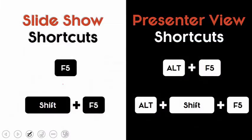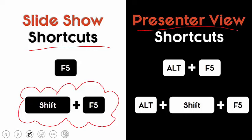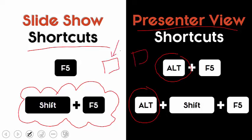Your slideshow shortcuts are F5 and Shift+F5 — by far my all-time favorites, which I use constantly when building and editing slides. To get to presenter view, all you need to do is throw in that Alt key, and have an extra monitor so your audience gets the slideshow and you get the presenter view on your laptop.